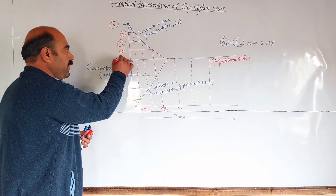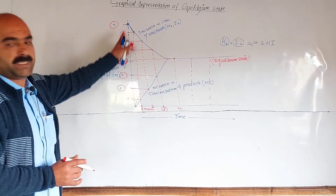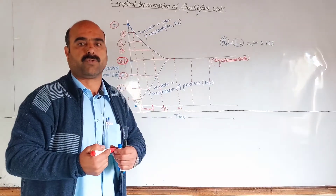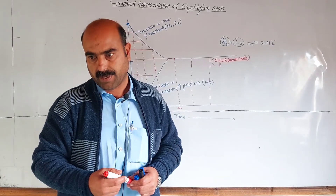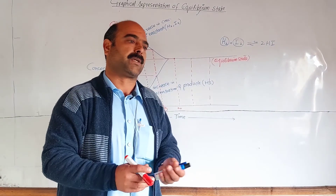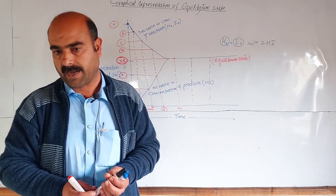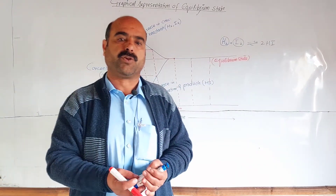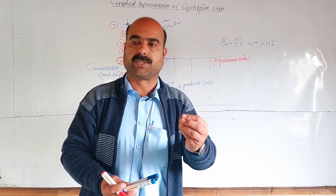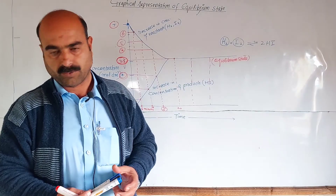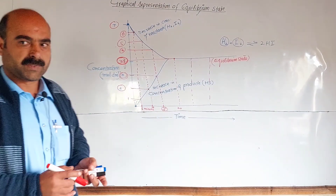At equilibrium, the concentrations remain constant. This does not mean the concentrations are equal — reactants might be at 2 mol/dm³ and products at 2 mol/dm³, or one at 1 mol/dm³ and another at 5 mol/dm³. What matters is that the rate becomes constant and the concentration becomes constant. This is the graphical representation of the equilibrium state.